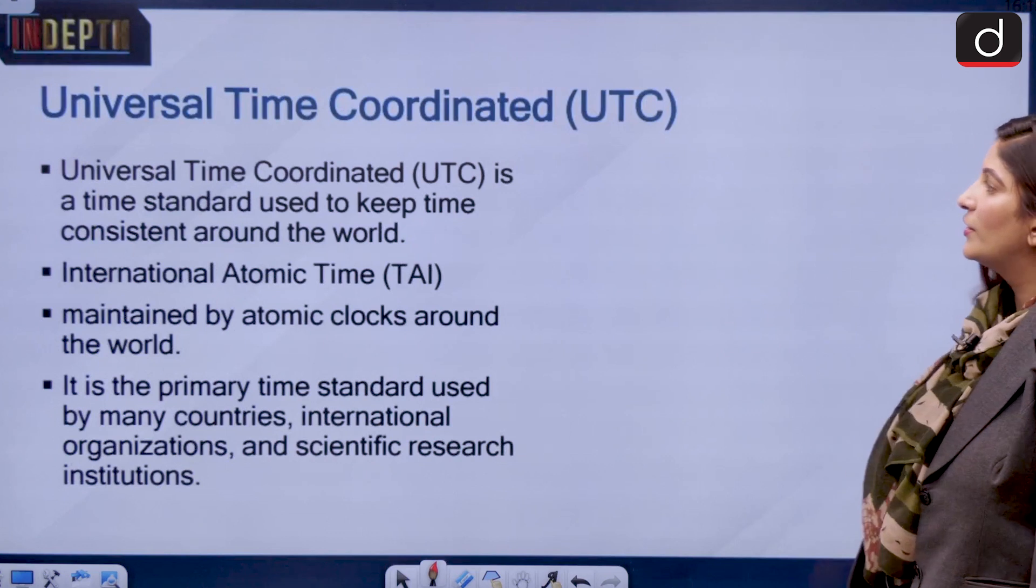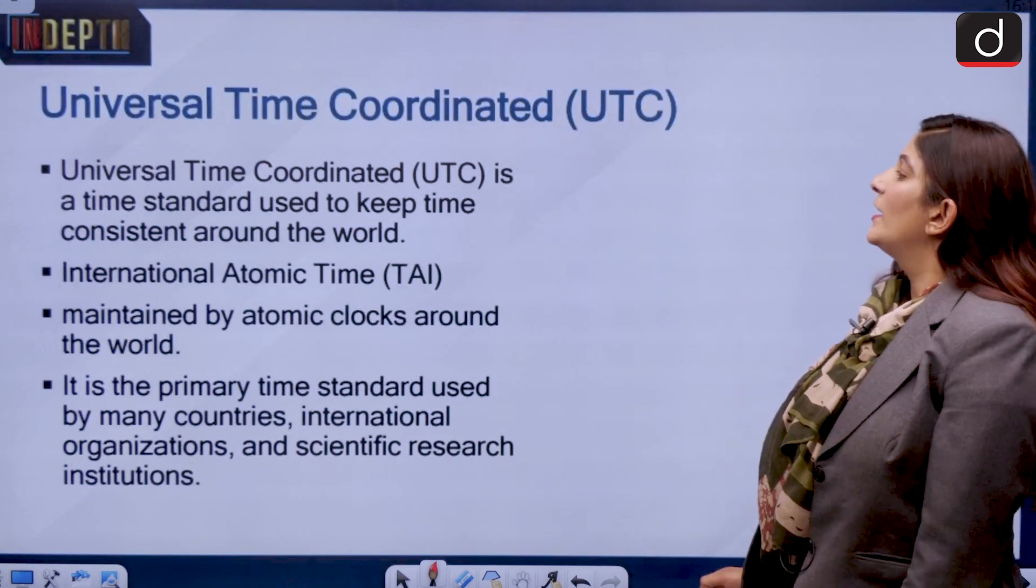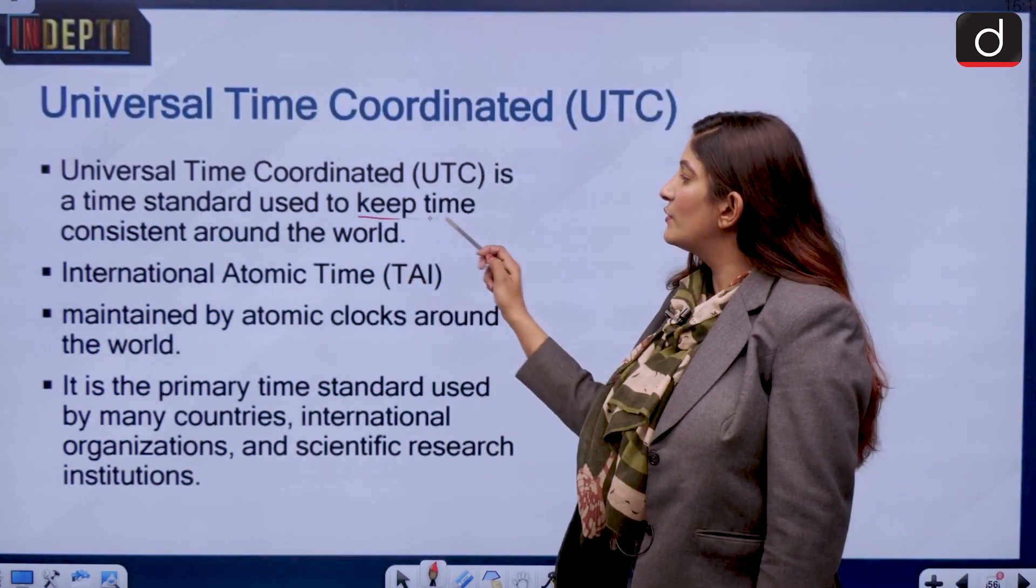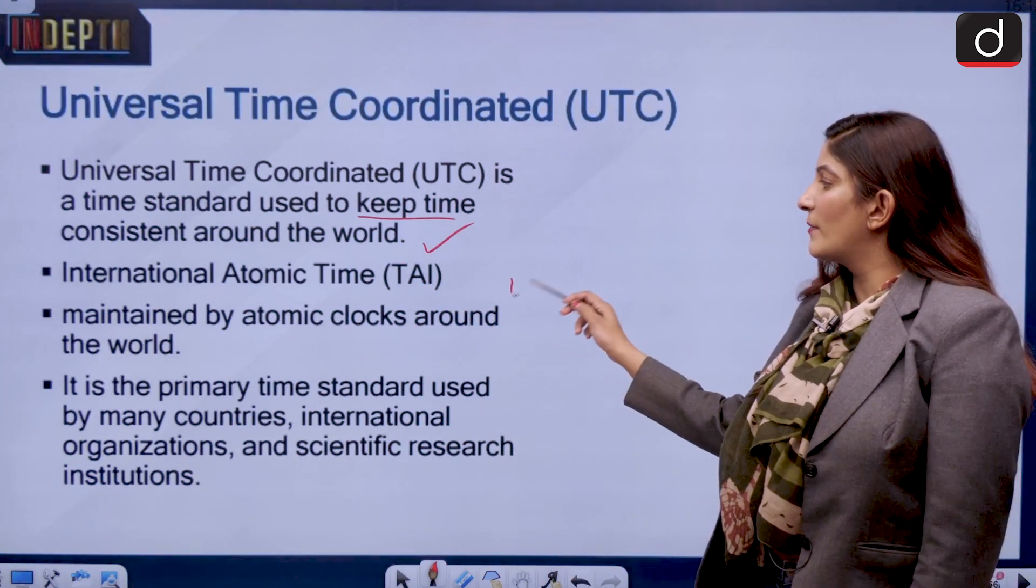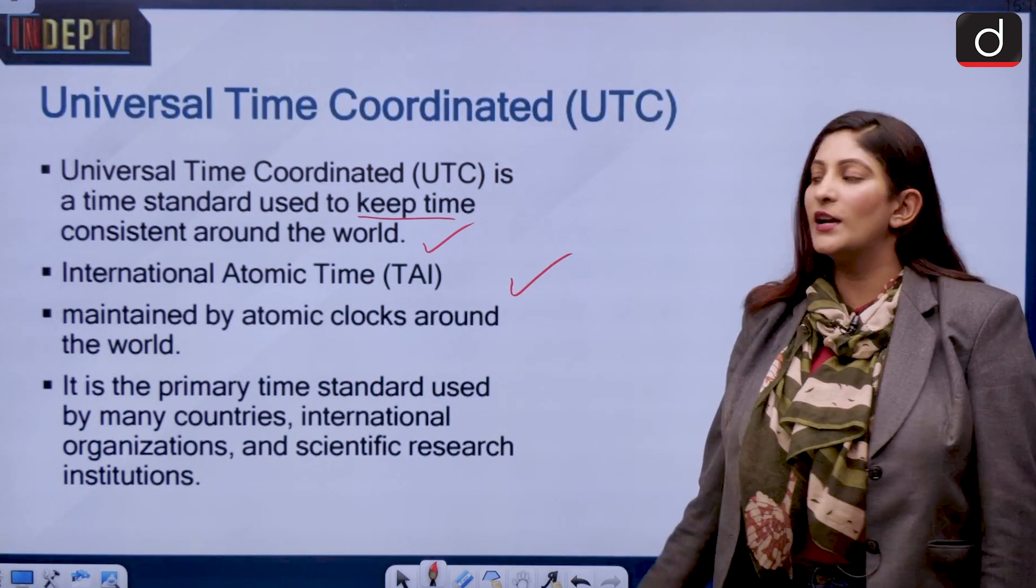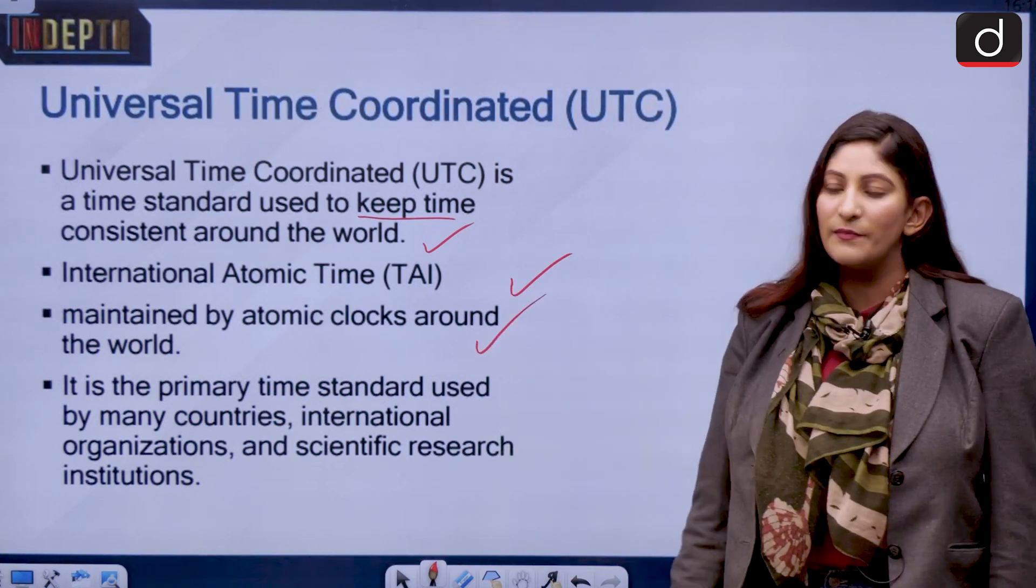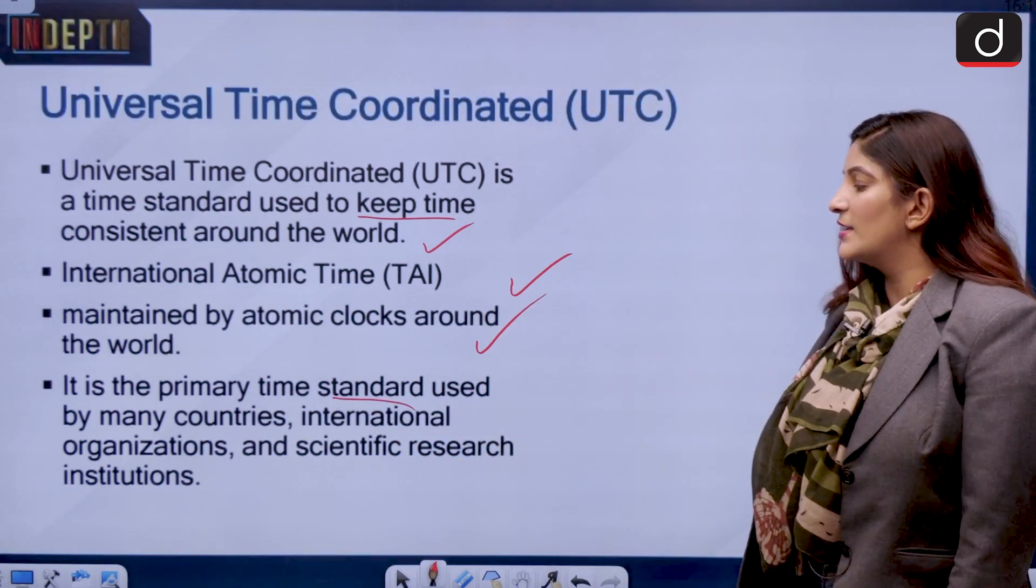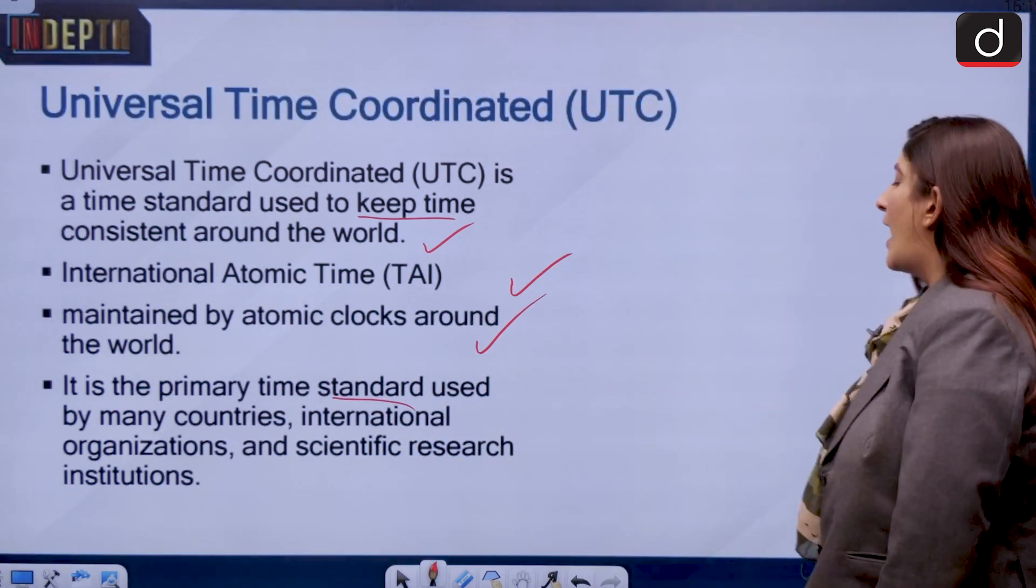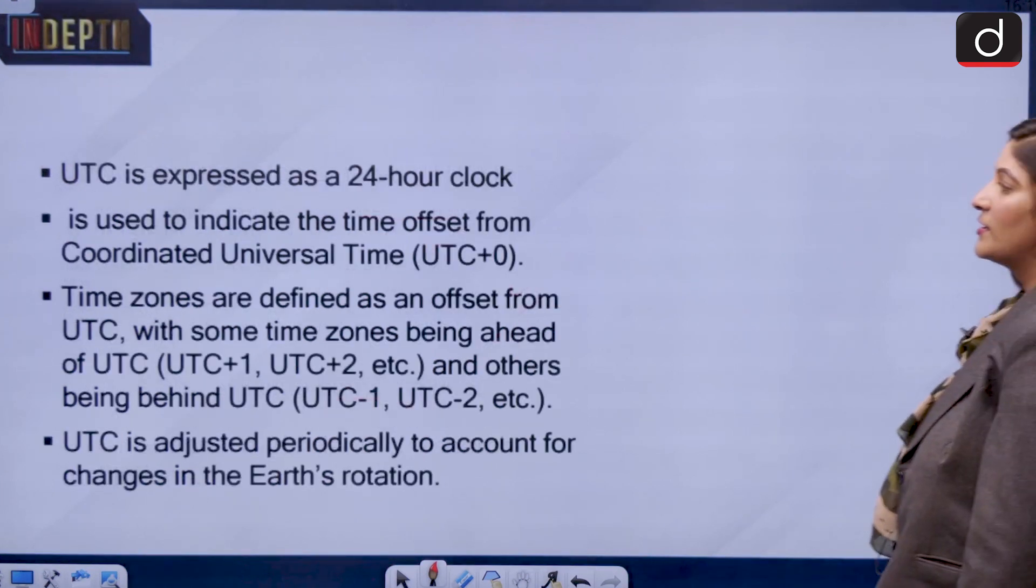If we talk about Universal Time Coordinated, it is a time standard which is used to keep time consistent or uniform around the world. It is done with the help of International Atomic Time, which is maintained by atomic clocks around the world, and it is the primary time standard which is used in many countries, international organizations, as well as scientific research institutions.